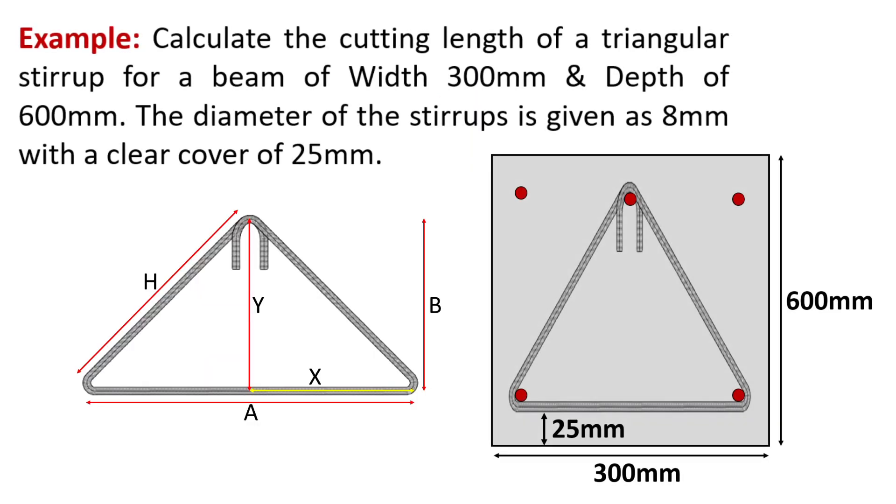For illustration, let's quote an example in this regard. Suppose we need to calculate the cutting length of a triangular stirrup for a beam of width 300 mm and depth of 600 mm. The diameter of the stirrups is given as 8 mm with a clear cover of 25 mm.